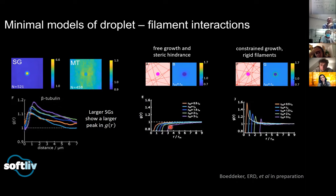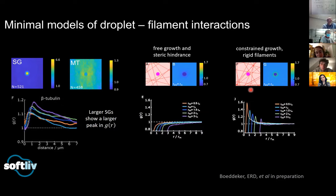We need some sort of interaction between microtubules and stress granules. We decided to develop a model of constrained growth, where we pick a random location inside the network and just grow the droplet, allowing it to move until it has enough contacts with the rigid microtubules that it can't grow any further. We call this the constrained growth model, and we see nicely that we get an enhancement of microtubules localized to the surface. However, this model captures some aspects of the data but is wrong in other ways: in the real data, the peak of G(r) increases with larger stress granules, but in this simple model it decreases.